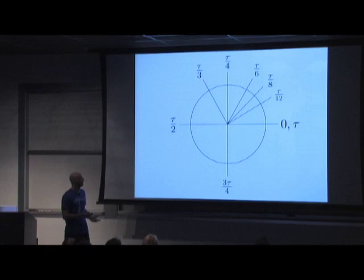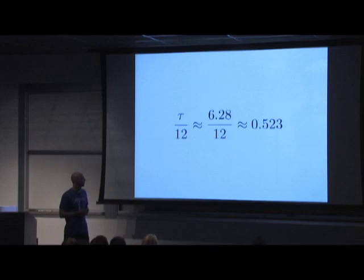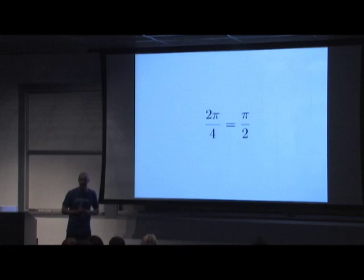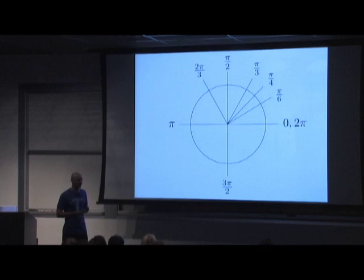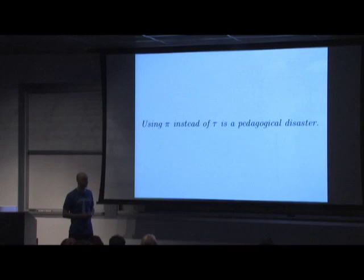We see a natural correspondence between radian angle measure and fractions around the circle. Tau over 12 is just a twelfth of a turn — but it's also a number: τ/12 ≈ 6.28/12 ≈ 0.523. Now we see what the problem with pi is: a full turn is 2π, so a right angle is 2π/4, but the 2 cancels and you end up with π/2. You have the absurd situation where a quarter turn equals a half pi. Using pi obscures the underlying relationship between radian angle measure and the circle constant — it's a pedagogical disaster.